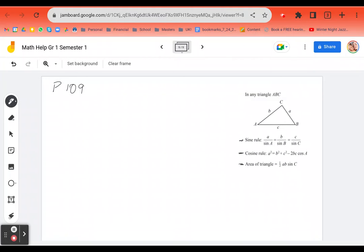So question one on page 109 is asking for the area of this triangle. GH, this is 12, this is F, this is 37, and this is 9.